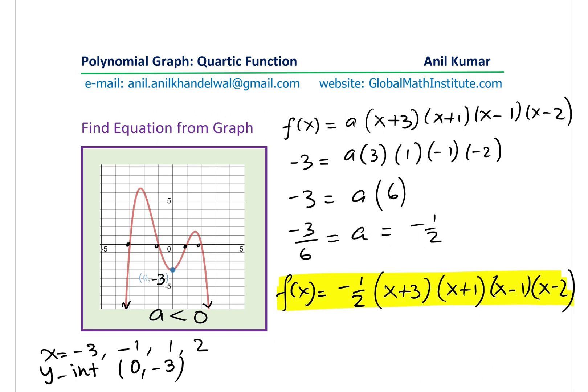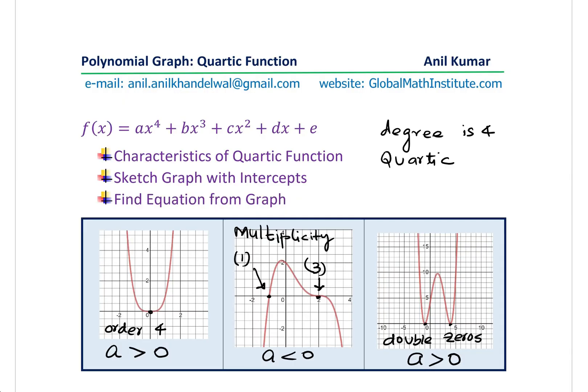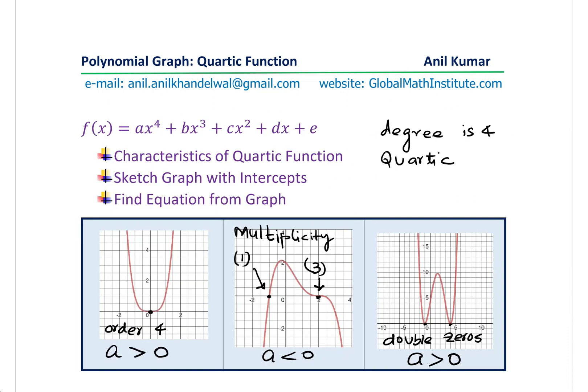To find the equation from a graph, we need to read the x and y intercepts, then find the equation as shown in these examples. With that, we come to the end of our video where we have learned how to sketch quartic functions, how they look, and what role x and y intercepts play in sketching the graph. Thanks for your time and all the best.